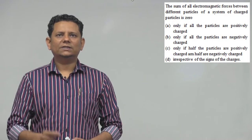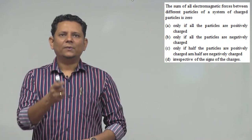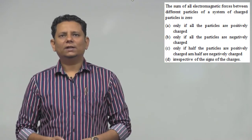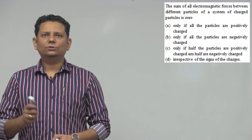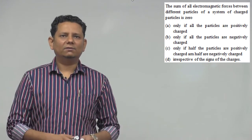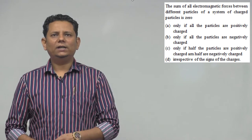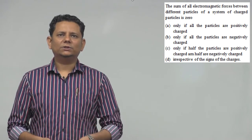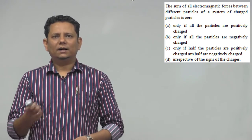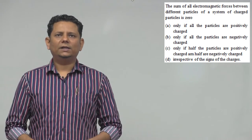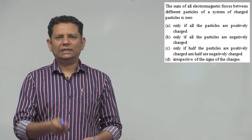Next question. Question C is: the sum of all electromagnetic forces between different particles of a system of charged particles is zero. Options are: only if all the particles are positively charged, only if all the charged particles are negatively charged. Option C is only if half of the particles are positively charged and other half are negatively charged. Option D is irrespective of sign of the charges.